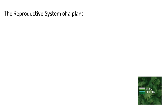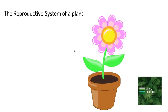Hello, today we're looking at the reproductive system of a plant and the reproductive organ of a plant, which is a flower. Obviously it looks like this in a cartoon, but on the inside it looks a bit different.